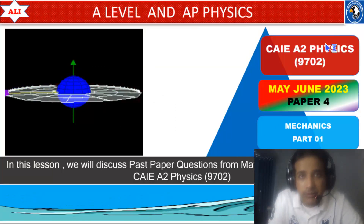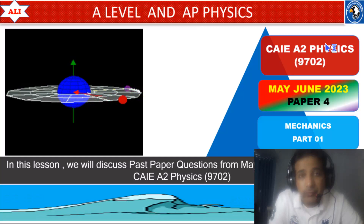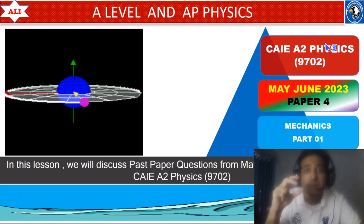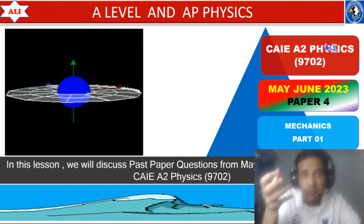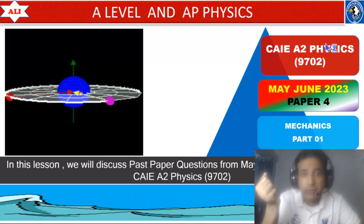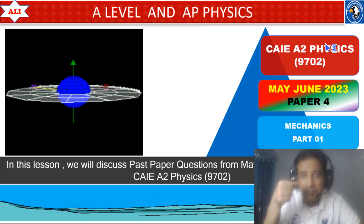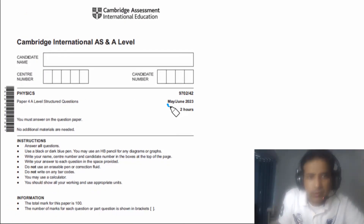Welcome to A-level and AP Physics. In today's lesson we will discuss past paper questions from the May/June 2023 paper, variant 2. Our main focus will be on gravitational field — we will discuss a beautiful question about Newton's law of gravitation in detail so you can improve your conceptual understanding.